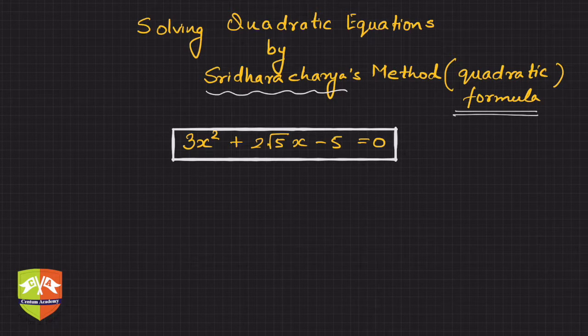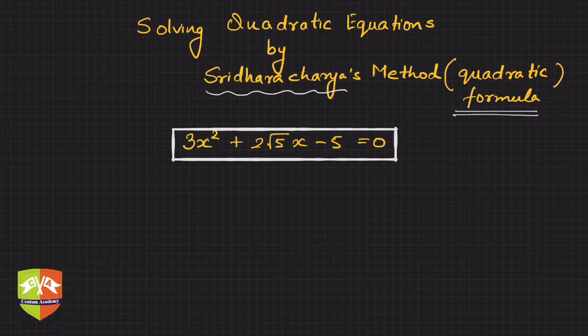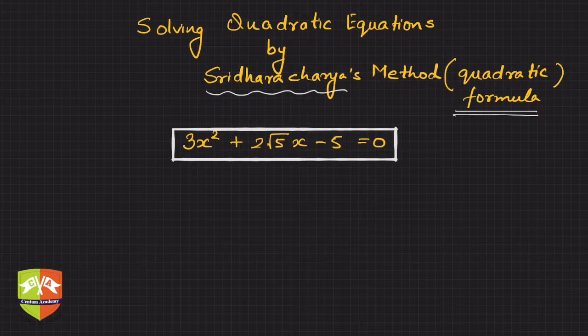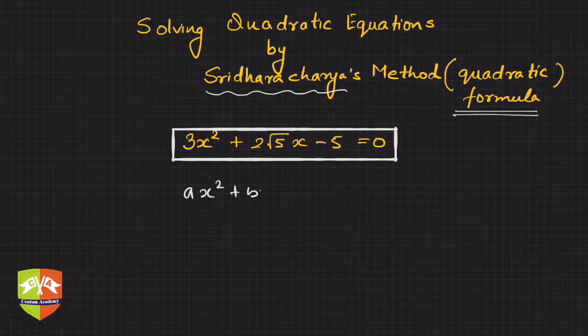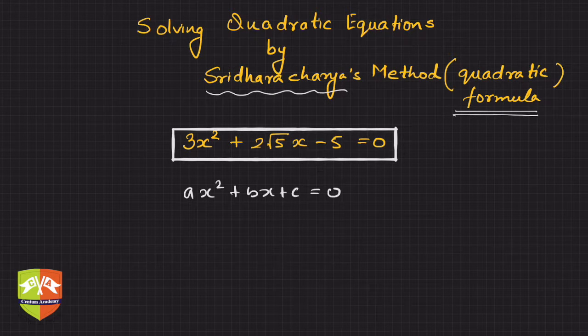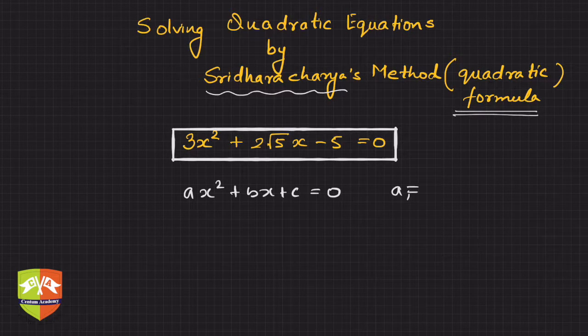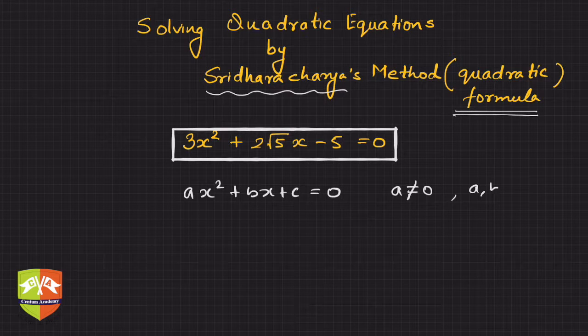Let's solve this quadratic equation. Sridharacharya formula says that if you have an equation ax² + bx + c = 0, where a is not equal to 0 and a, b, c are real numbers,